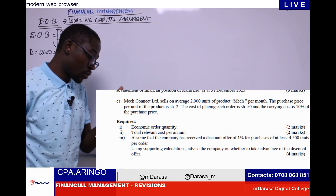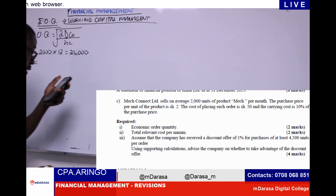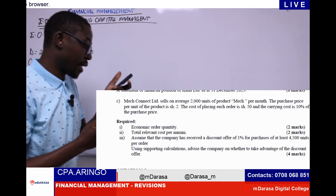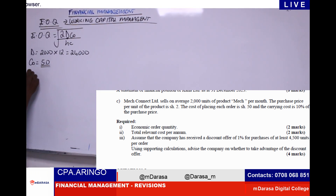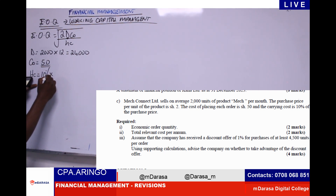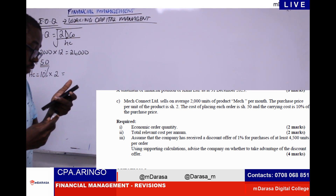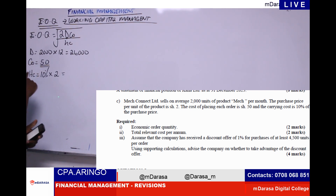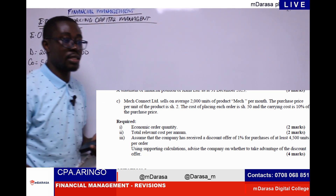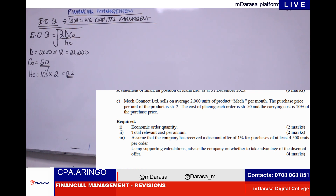The purchase price per unit of product is 2, so our purchase cost is 2. Our ordering cost — we're told the cost of placing an order is 50. Then carrying cost is 10% of the purchase cost. Carrying cost is the same as holding cost, which the examiner tells us is 10% of the purchase price. So 10% of 2, which gives us 0.2. That is our holding cost per unit.